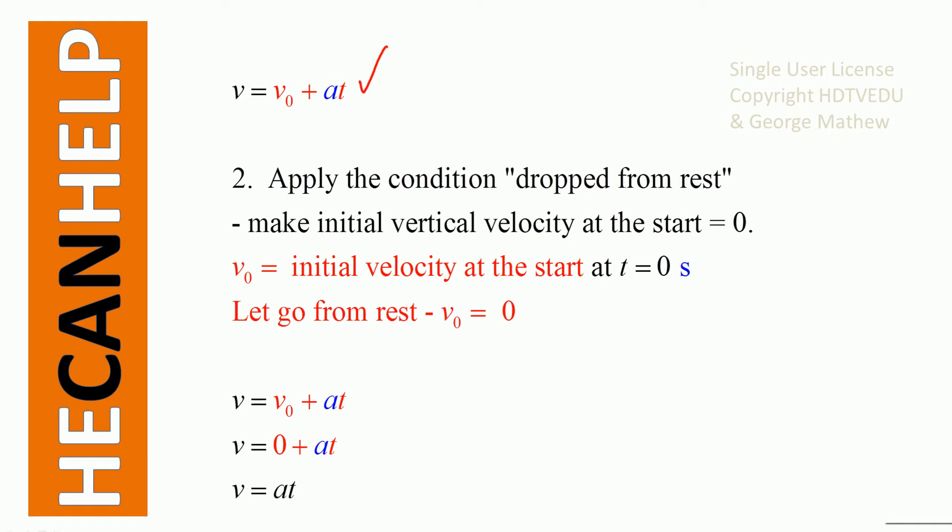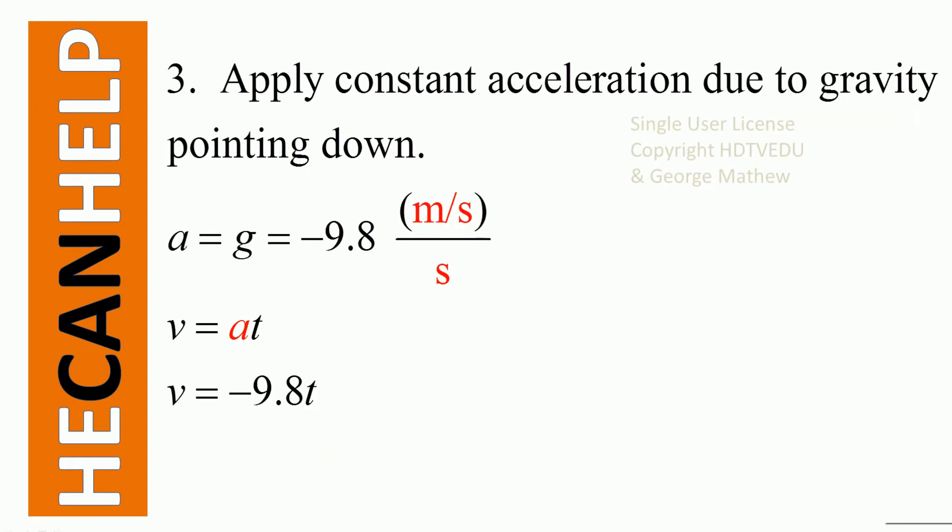And then what do we do? Apply the condition dropped from rest. If it is dropped from rest, what is v0? Zero. It is let go from rest, so initial vertical velocity is zero. That gives us zero plus at, or v equals at.